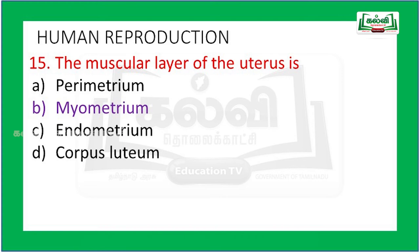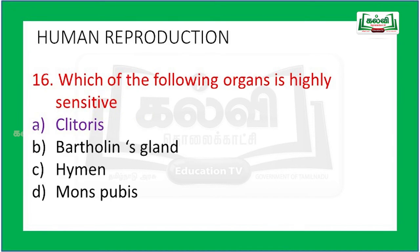The muscular layer of the uterus is the myometrium — the middle thick muscular layer. The perimetrium is the outer thin membrane and the endometrium is the inner glandular and vascular layer. The myometrium contracts during parturition so that the fetus will be delivered easily. Which of the following organs is highly sensitive? The clitoris in females is the highly sensitive organ.